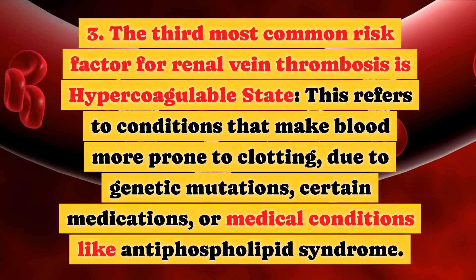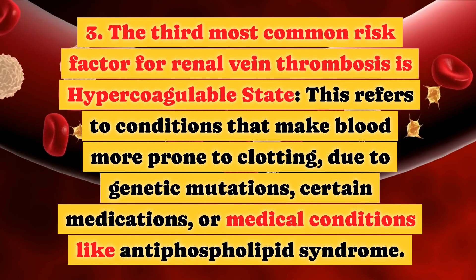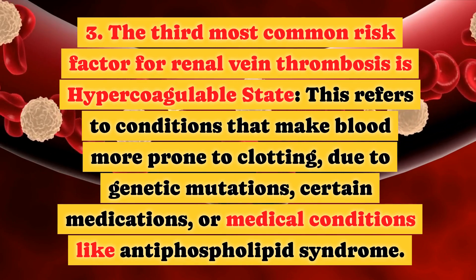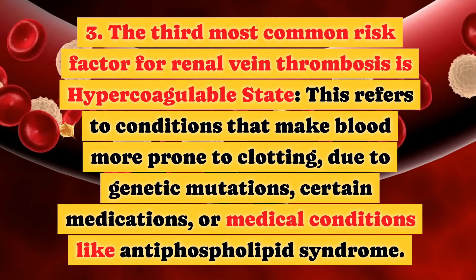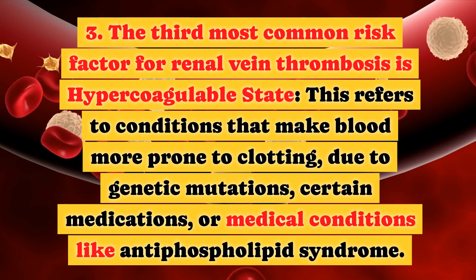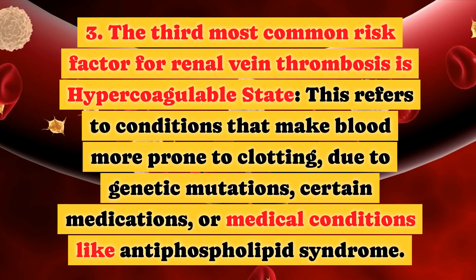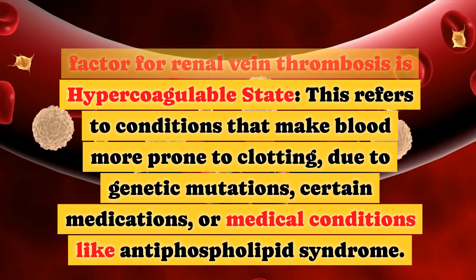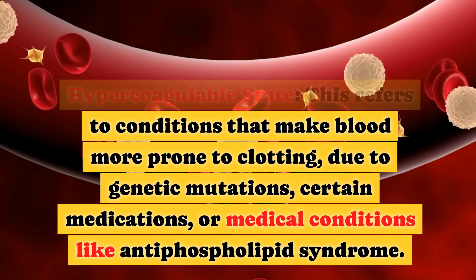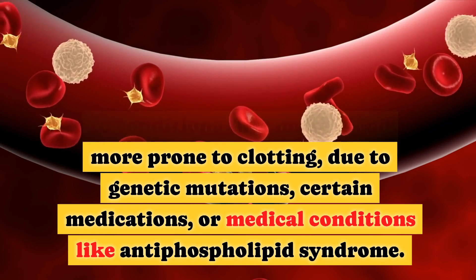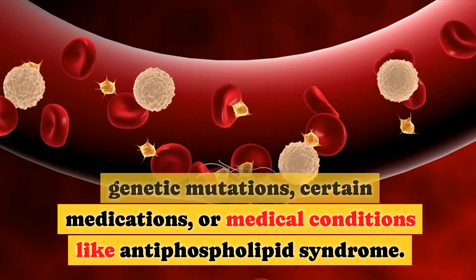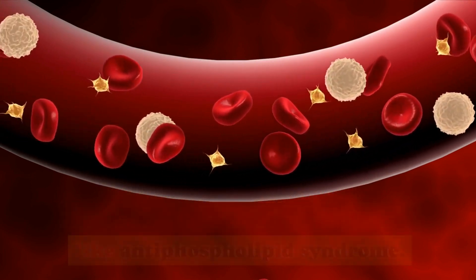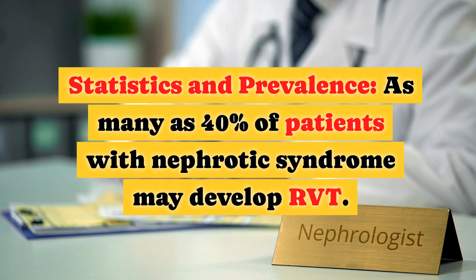3. The third most common risk factor for renal vein thrombosis is hypercoagulable state. This refers to conditions that make blood more prone to clotting, due to genetic mutations, certain medications, or medical conditions like antiphospholipid syndrome.